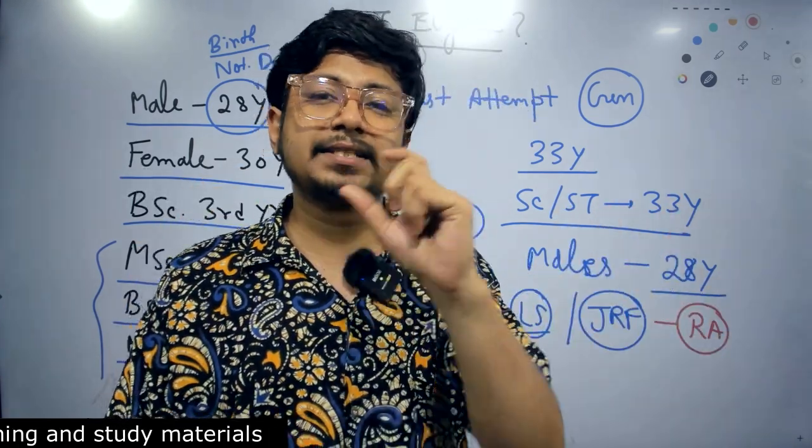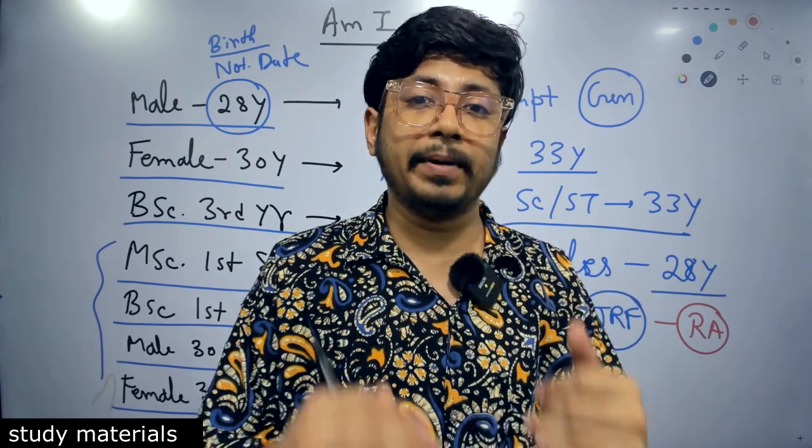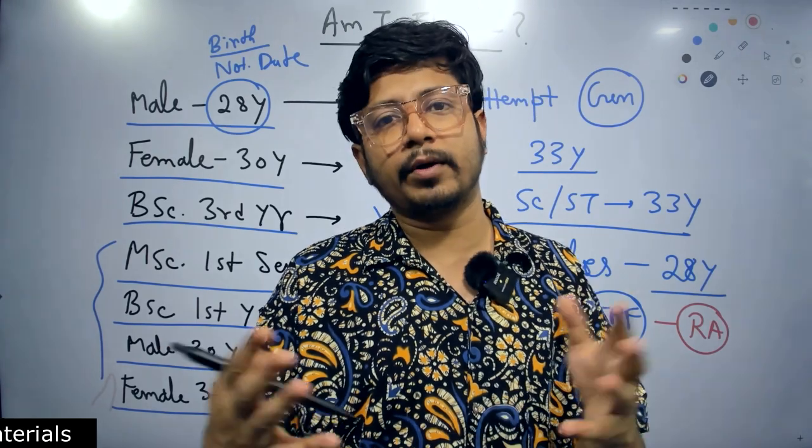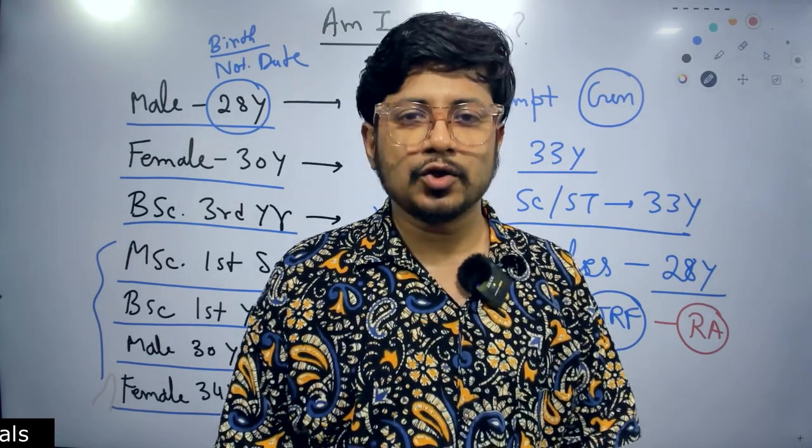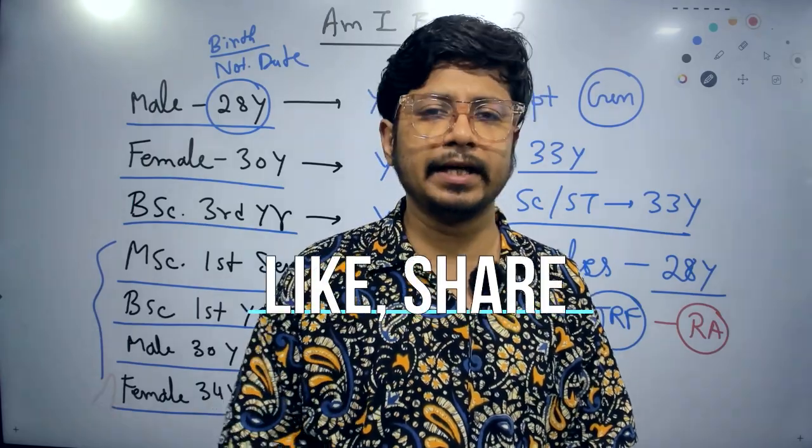In the form, you have LS only, you have LS and JRF, or JRF only. You need to select that based on your requirement. Don't get greedy there because even if you select, if it is not in the rule, you will not be allowed to get that. So that is all about eligibility criteria for CSIR NET life science examination. I believe it is clear to you.